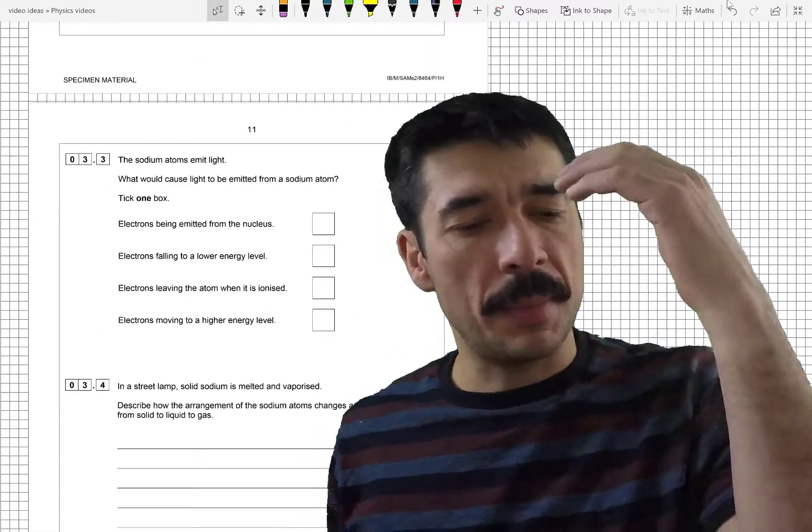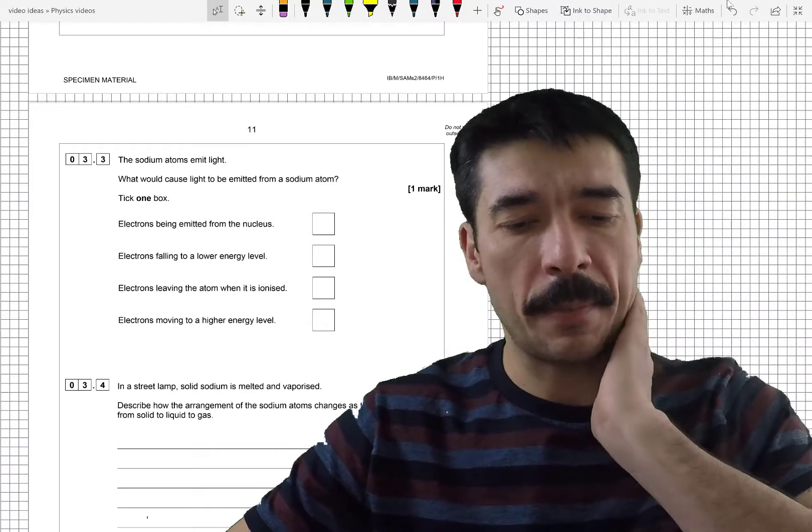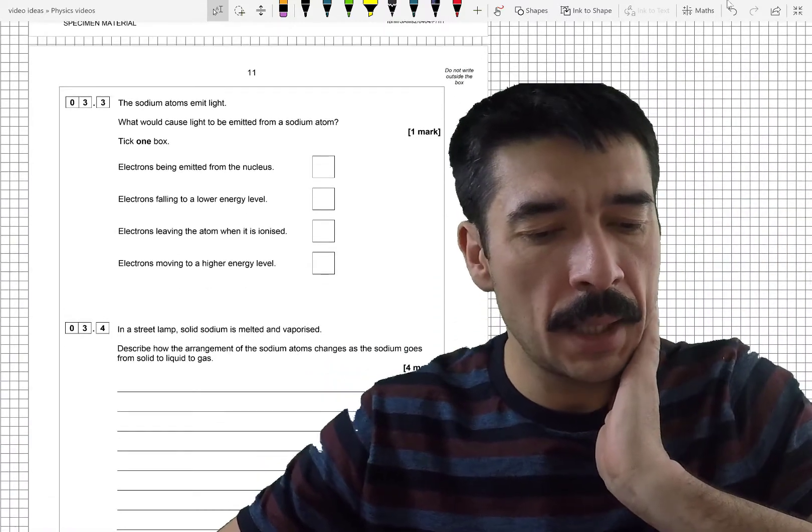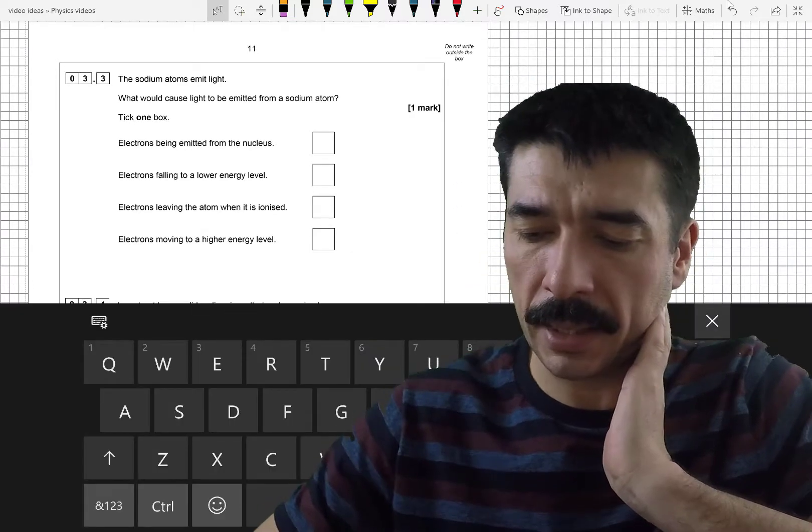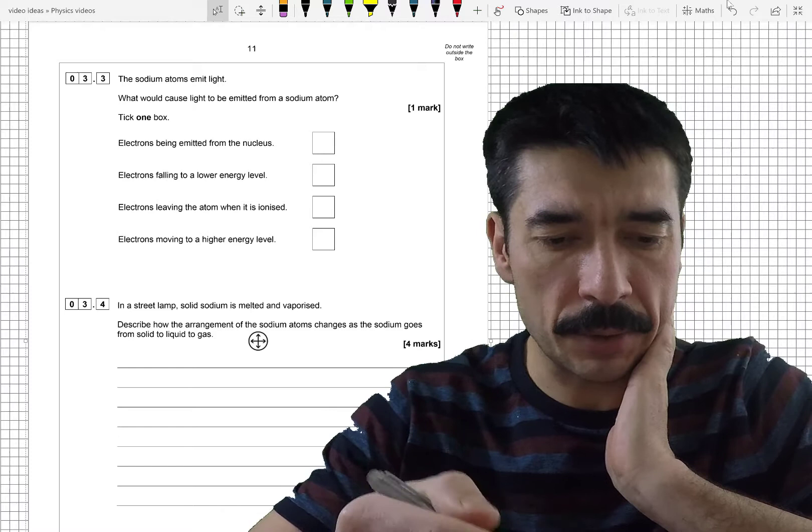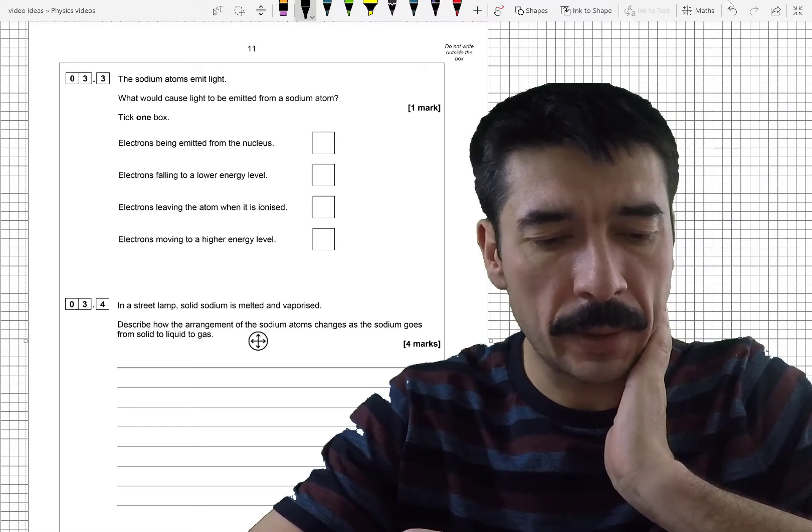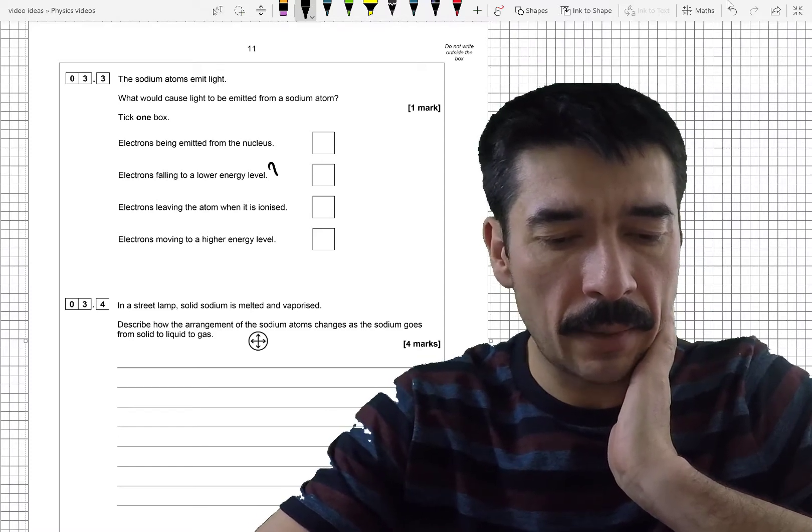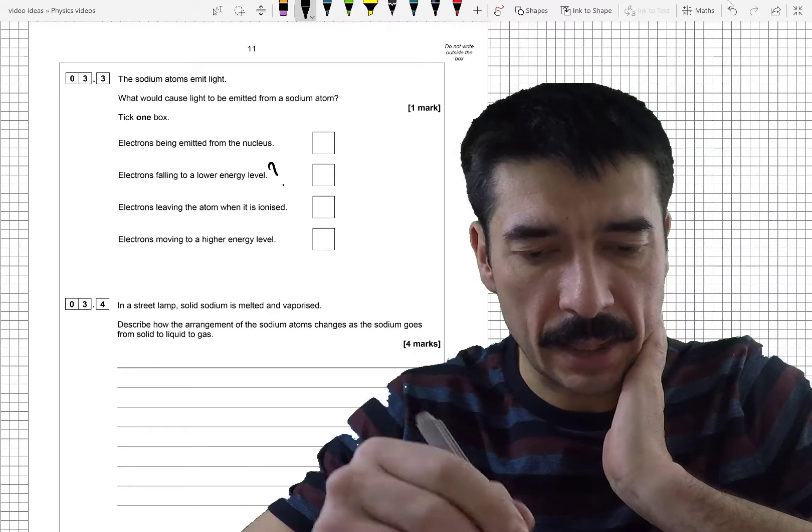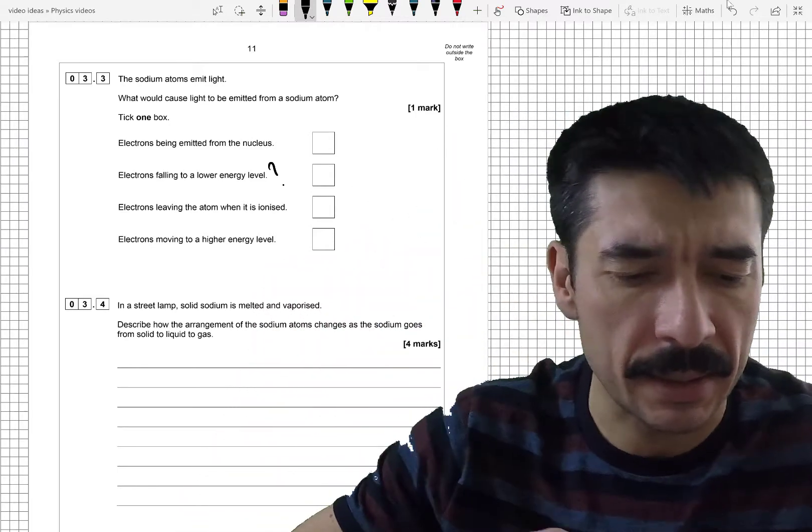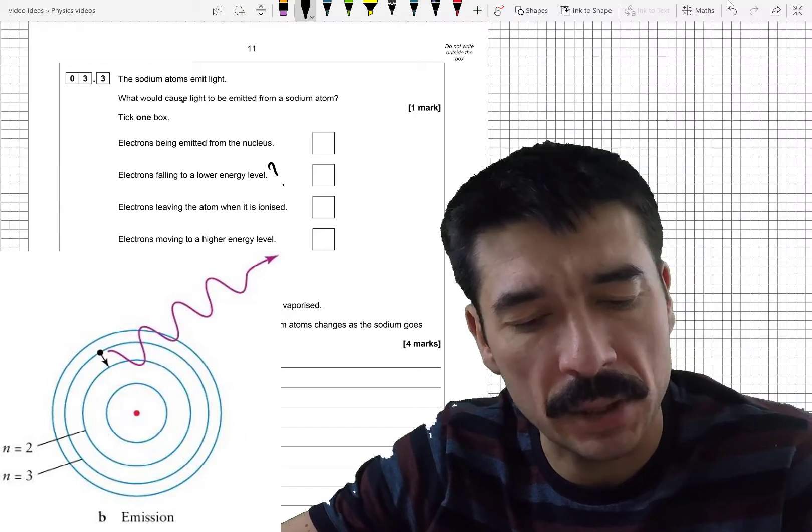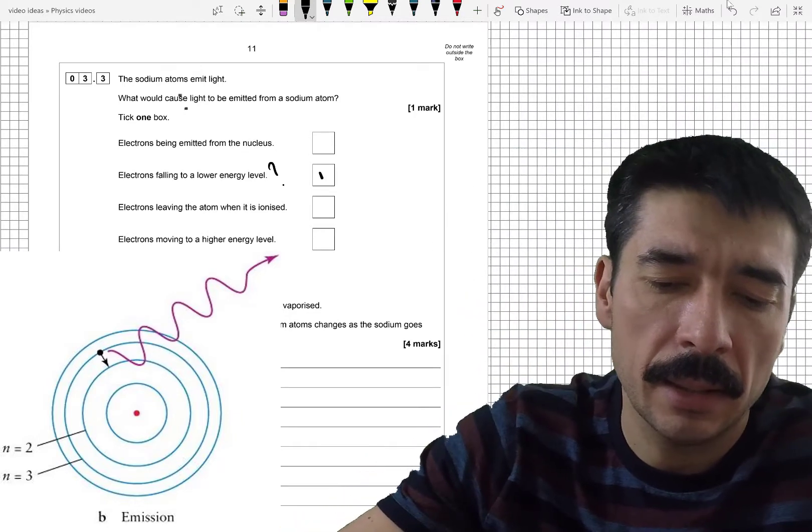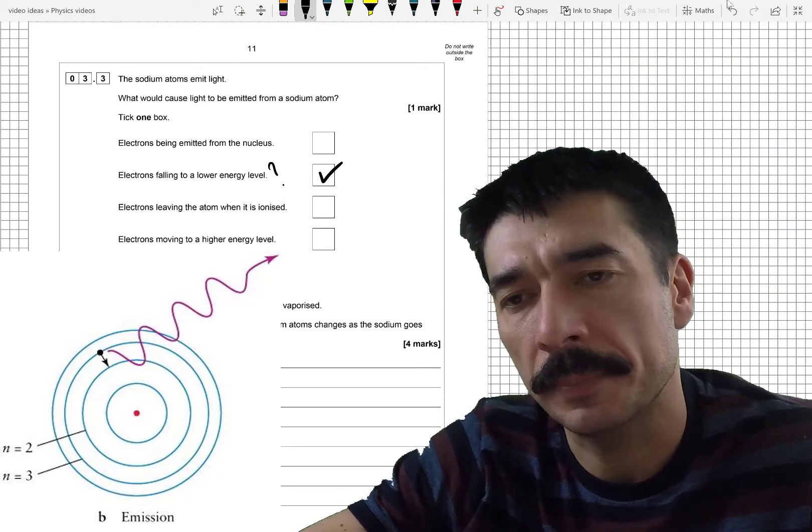The sodium atom emits light. What would cause light to be emitted from a sodium atom? Electrons being emitted from the nucleus. Okay, this does actually happen. It's called beta decay. Is it going to happen in this case? I'm not sure. Electrons fall into a lower energy level. Having done the A level, this seems like it's the right answer. Electrons leaving the atom when ionised. Electrons moving to a higher energy level. It's electrons dropping to a lower energy level.